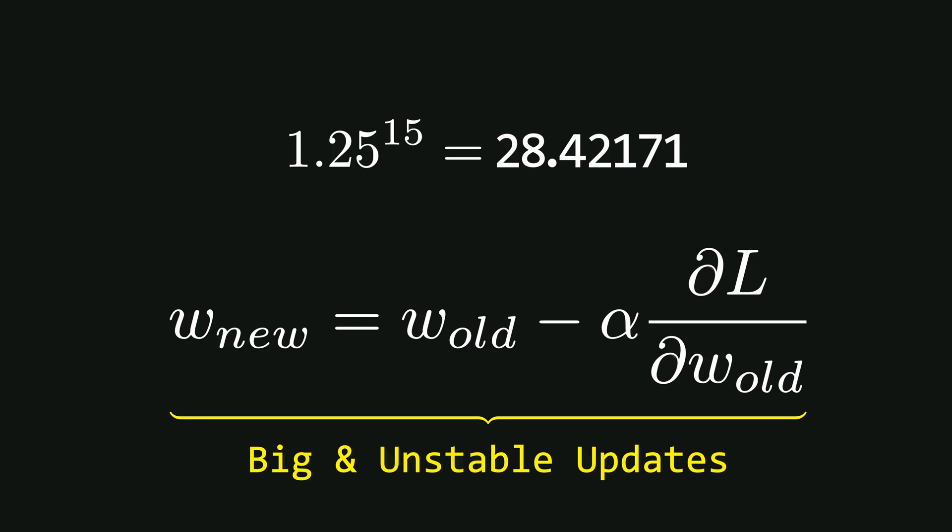Exploding gradients are usually detected quickly because they cause large, sudden updates while vanishing gradients are harder to notice at first because the gradient is so small that the weight updates are almost imperceptible.